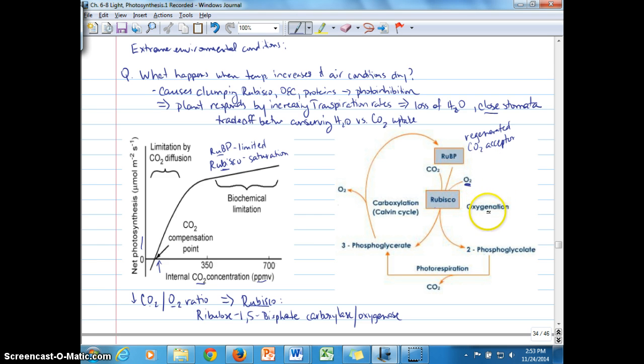When oxygen is the substrate for RUBISCO, then we have something different going on. This results in oxygenation of RUBP, which doesn't just produce two 3-phosphoglycerates anymore. It produces one 3-phosphoglycerate molecule and one,